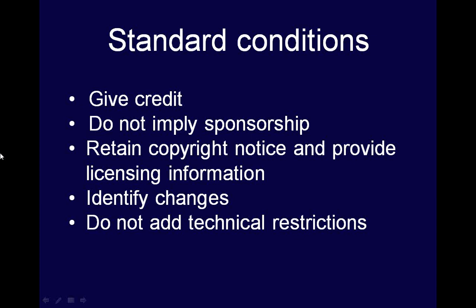For example: 'Copyright 2012 Cory Doctorow. This work is available under a Creative Commons Attribution license.' The next condition is to identify any changes made to the work if you make an adaptation. For example: 'This is a film adaptation of the novel Little Brother by Cory Doctorow, and it's available under a Creative Commons Attribution license.' Finally, any user of a CC licensed work can't add digital rights management, otherwise known as DRM, to the work that would prevent others from using the work under the license.